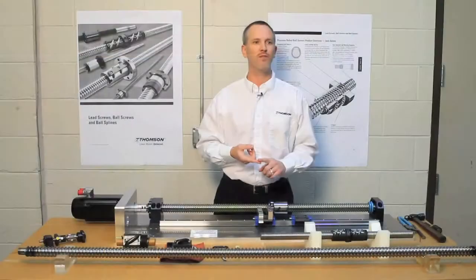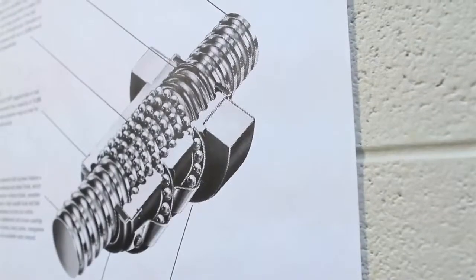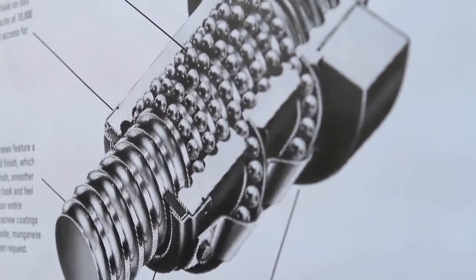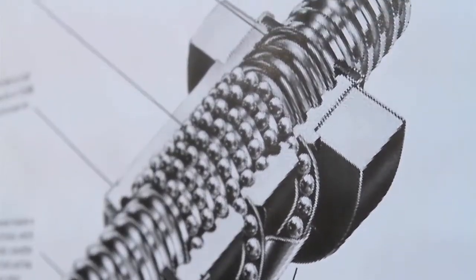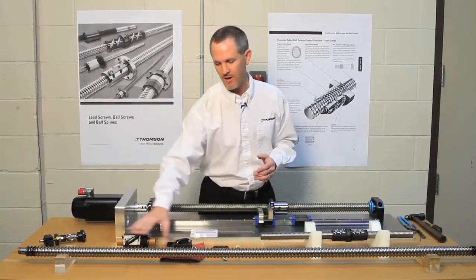You'll receive the ball screw in two different ways. One, as a complete assembly, where you send us the specs and we can produce whatever you want per your specifications. Otherwise you'll get components, where you'll get a ball screw and a ball nut.